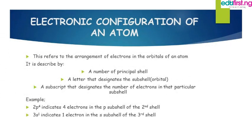Electronic configuration is the arrangement of electrons in the orbitals of an atom. It is described by the principal shell number, a letter describing the orbital or subshell, and a superscript describing the number of electrons in that subshell. For example, 2p4 means the second shell, p suborbital, with 4 electrons. Similarly, 3s2 indicates 2 electrons in the s subshell of the third shell.